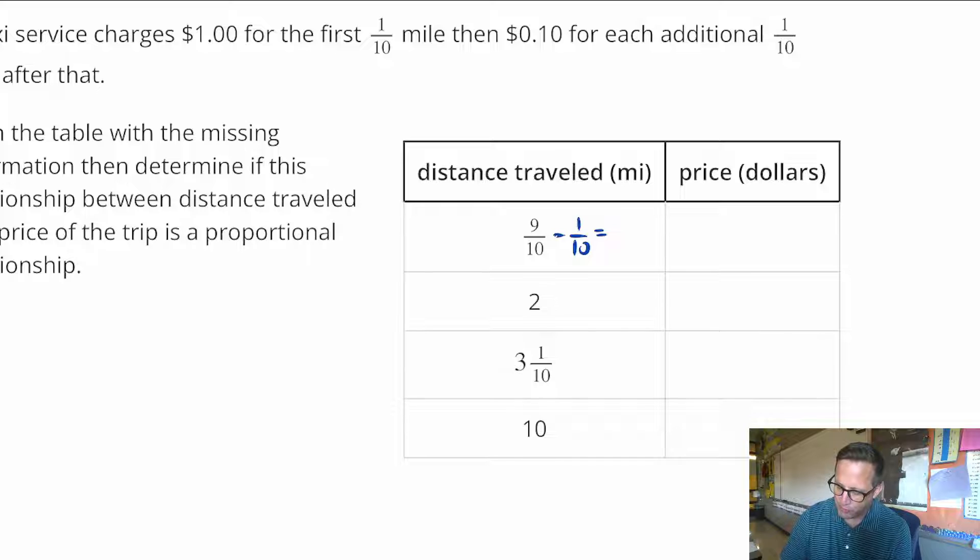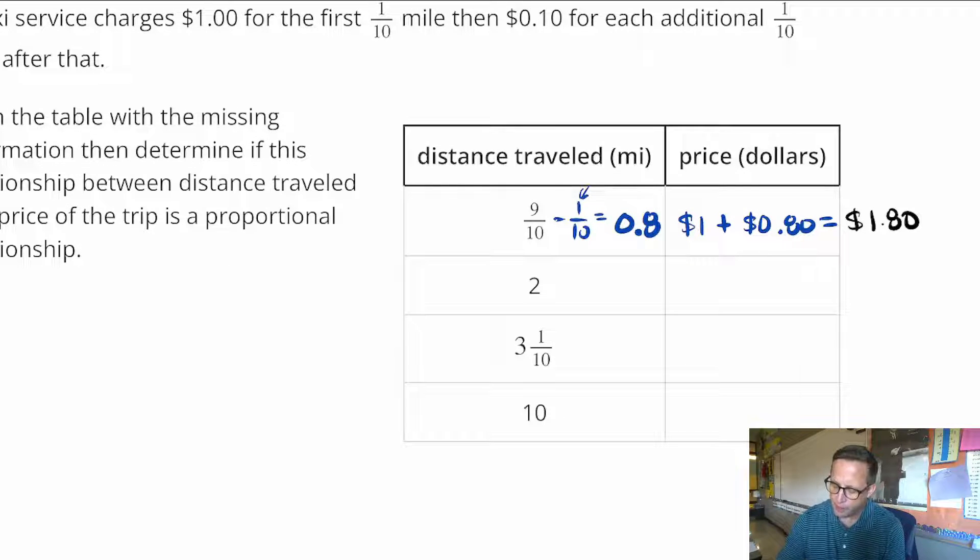It might be easier if I just write it like this, 0.8, just because we're dealing with money. So this right here, that's going to be, that's a dollar right there. And then you're going to add 80 cents to that, which comes out to $1.80. And how did I do that? 8 tenths, every tenth, according to this problem, 1 tenth equals 10 cents. So we have 8 tenths there, so in essence, we have 8 dimes. 8 dimes is worth 80 cents.